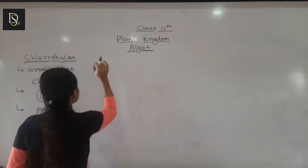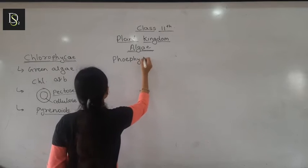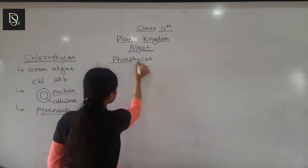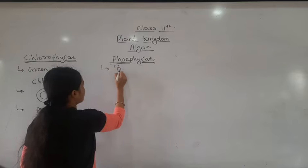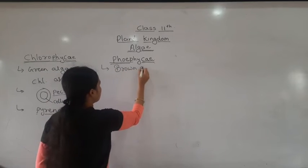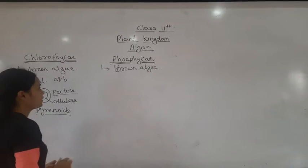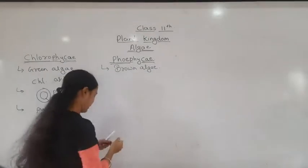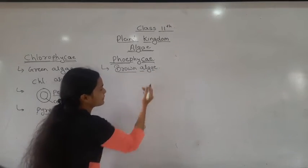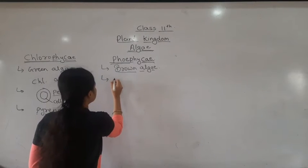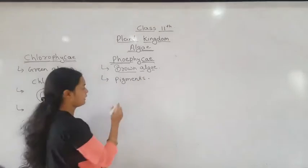Then the next class is Pheophyceae. This is the second class of algae. They are commonly called brown algae. Then what are the characters of this brown algae? First, they are brown algae, meaning their color shade is somewhat brownish. Why? Due to the pigments.